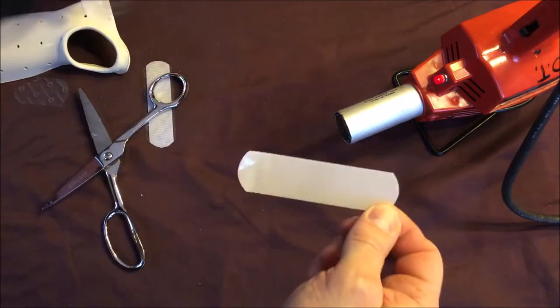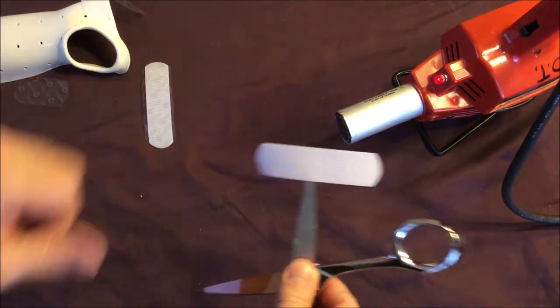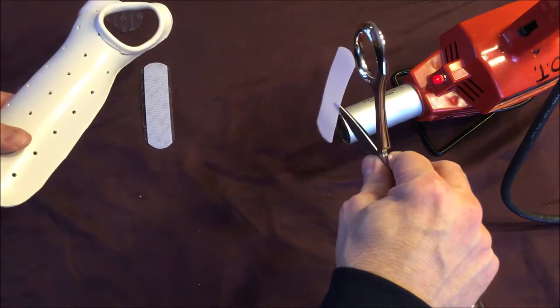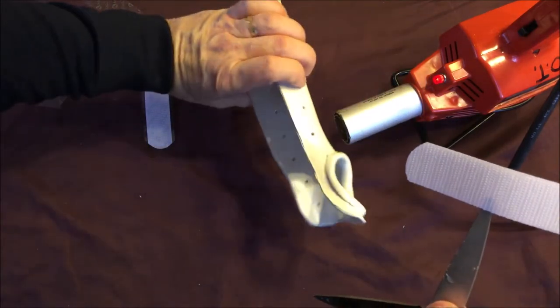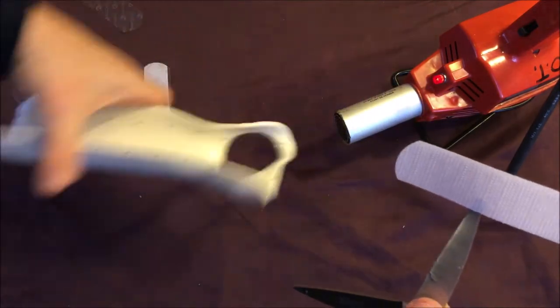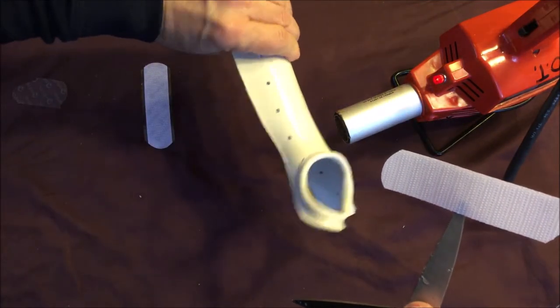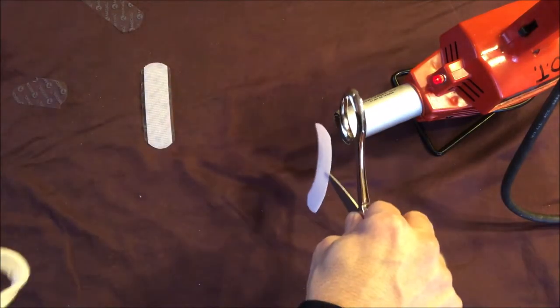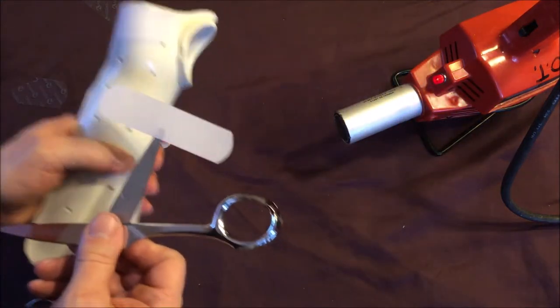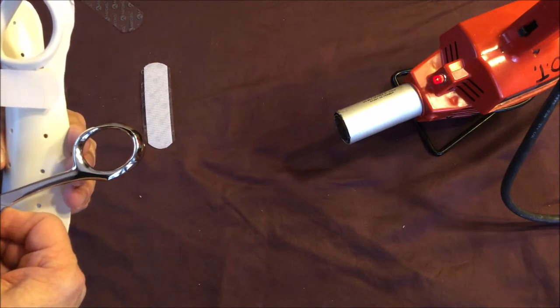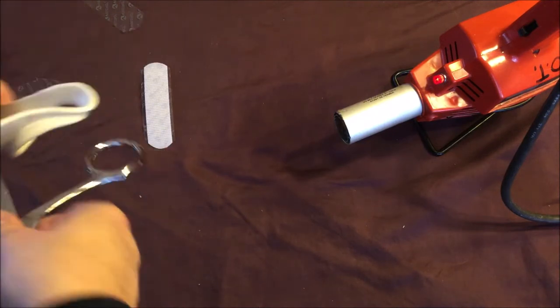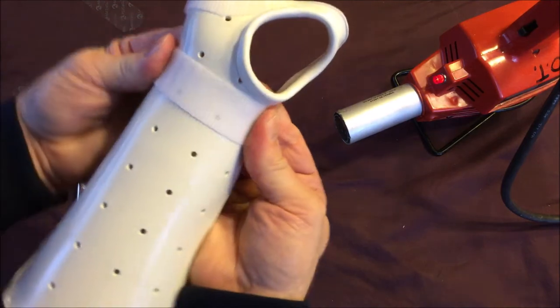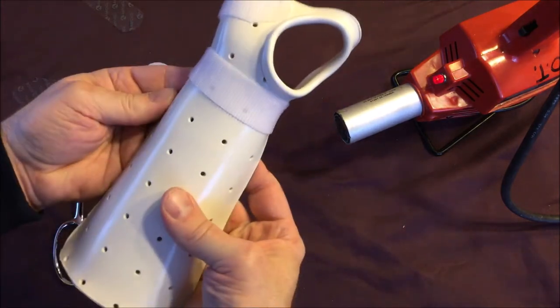If you don't do that, if you just put the velcro hook directly on the orthosis without this heat treatment, it will likely pull off after several days of use. So you'll do this for each bit of velcro hook that you adhere to your orthosis. You can see here I'm putting the velcro hook again right at the wrist joint. A lot of people will tend to put that one a little more proximal, but then you're not right at the wrist joint, so you don't control the wrist as well.